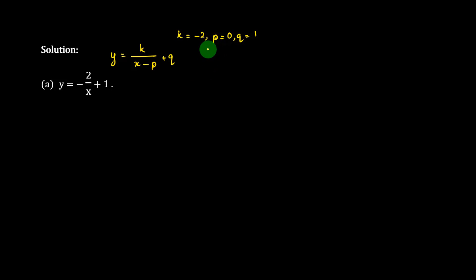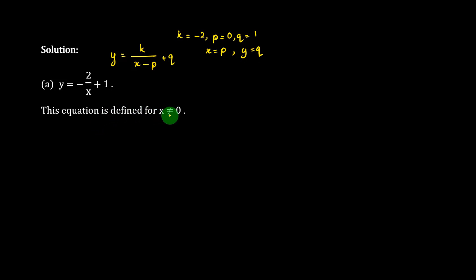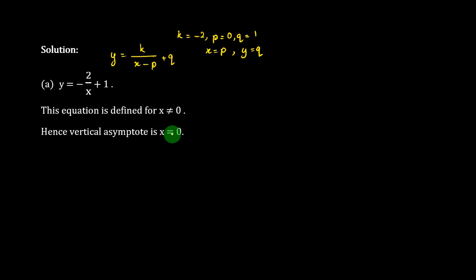And then, h squared p g r, y goes to 2r, and this equation is defined for h not equal to 0.